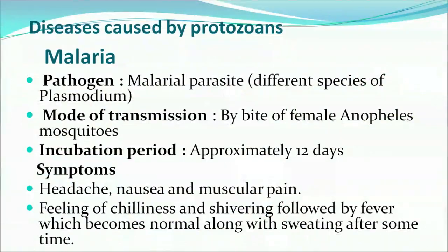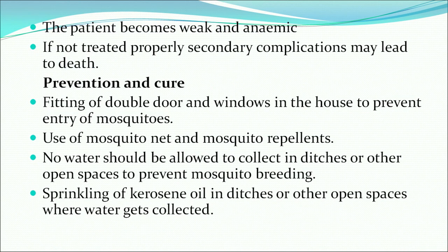Now we will discuss diseases caused by protozoans. The first is malaria. The pathogen is the malarial parasite, different species of Plasmodium. Mode of transmission is by the bite of female Anopheles mosquitoes. Incubation period is roughly 12 days. Symptoms include headache, nausea, muscular pain, chilliness and shivering followed by fever which becomes normal along with sweating. The patient becomes very weak and anemic, and if not treated, secondary complications may lead to death. Prevention includes using mosquito nets, repellents, and preventing water collection in open spaces.